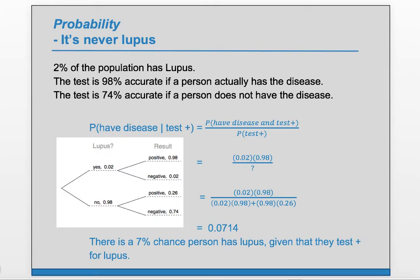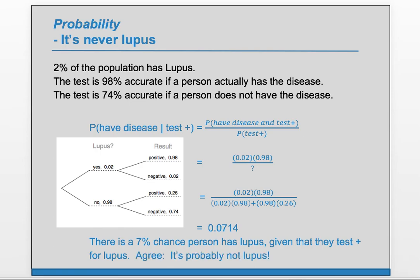So there's about a 7% chance the person has lupus given that they tested positive for lupus. That's surprising. How is there only a 7% chance if they got a positive test result? If you look at the diagram again, you can see that a lot of the positives are happening along this branch. Only 2% have lupus to begin with, so a lot of the positive results will be from people on the no-lupus branch. People start out with a 2% chance of having lupus; knowing they tested positive increases the likelihood to 7%, but that 7% chance is still quite small. So agree — it's probably not lupus.